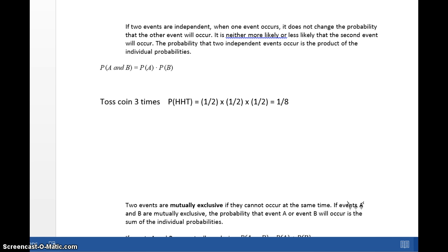The probability of A and B occurring is the probability of A times the probability of B. For independent events, you multiply the probabilities. For example, the probability of tossing a coin three times and getting head, head, tail is the multiplication of the three probabilities: 1/2 times 1/2 times 1/2, which is 1/8.